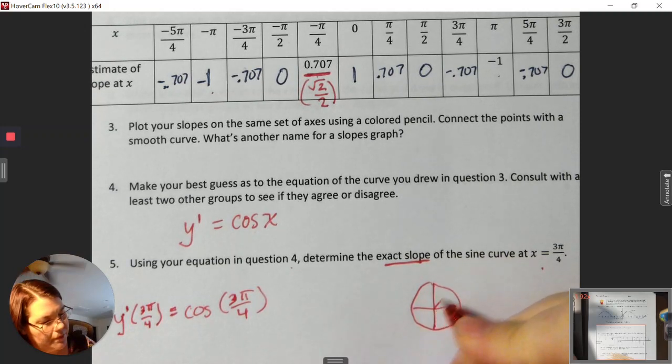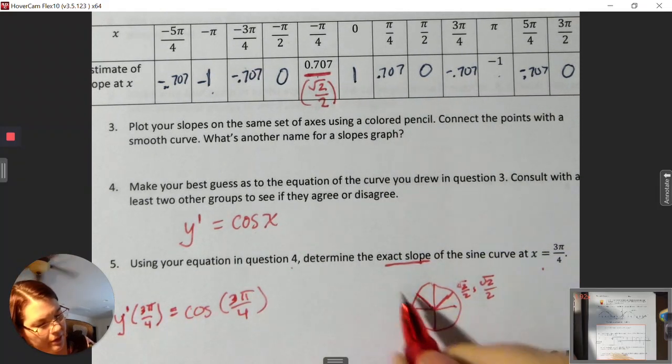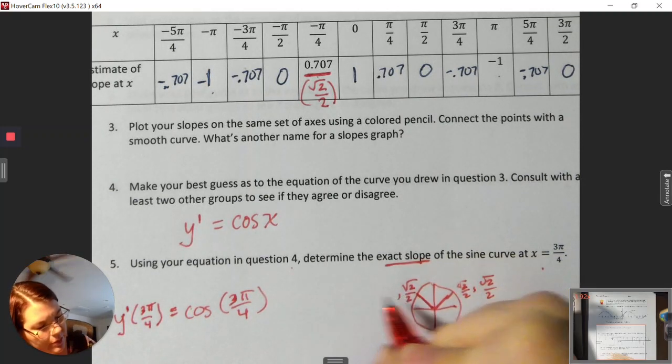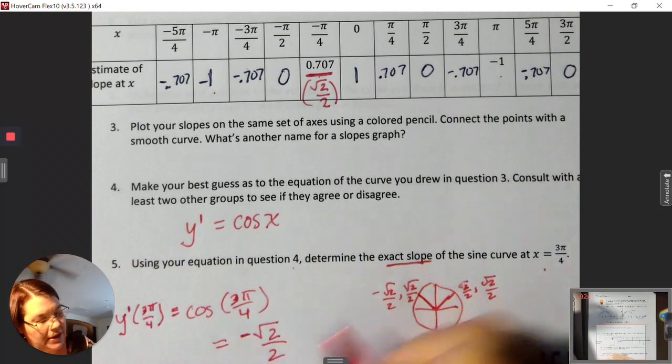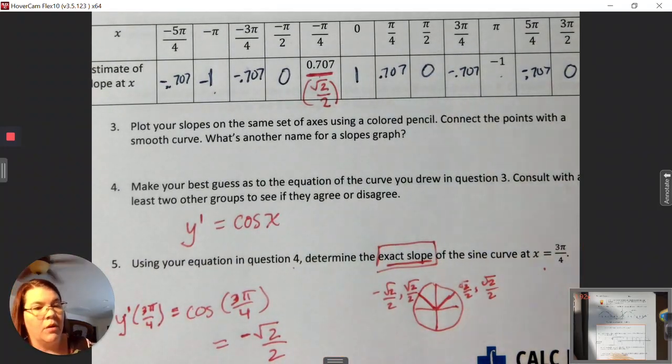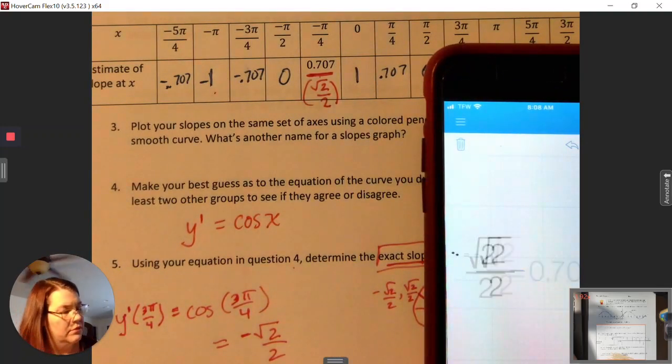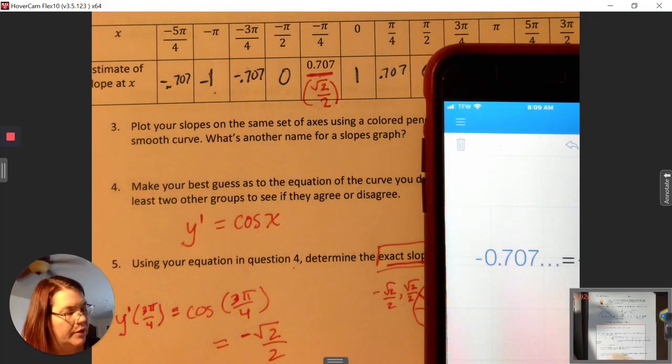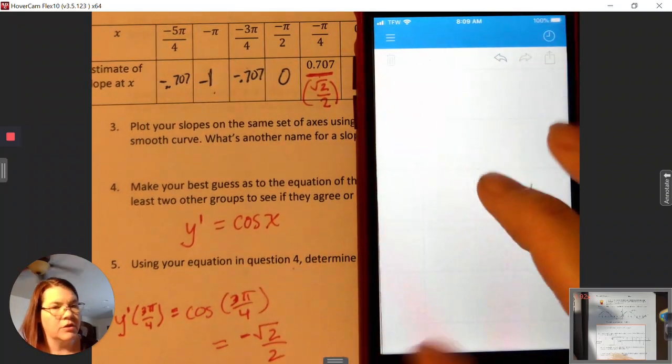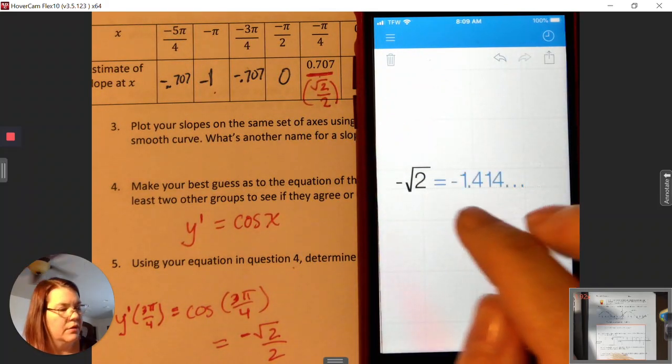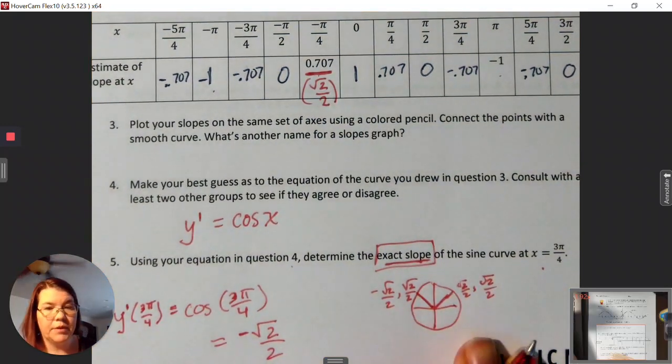Cosine at 3 pi fourths. This is pi fourths on the unit circle, and 3 pi fourths is over here. In this quadrant, y is positive but x is negative. So this equals negative radical 2 over 2. It said exact, so it's not looking for the decimal. That's the exact slope.